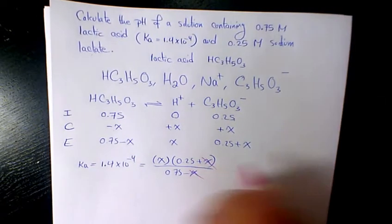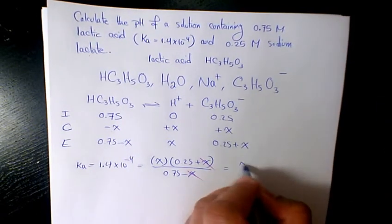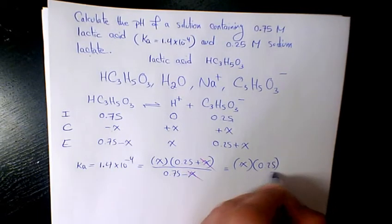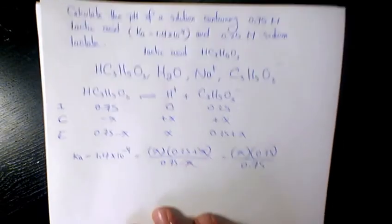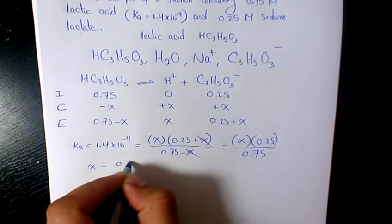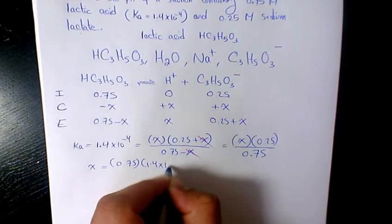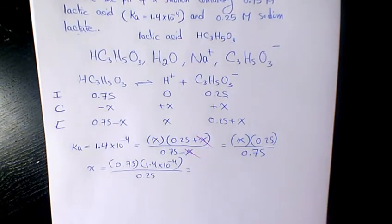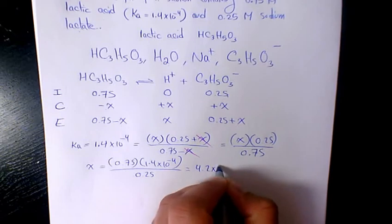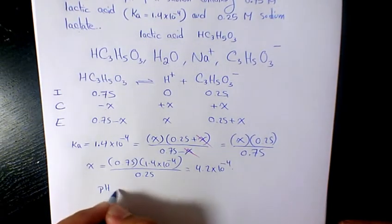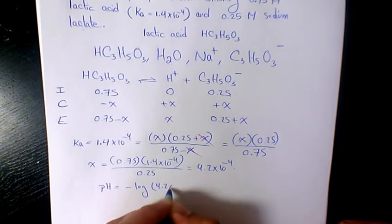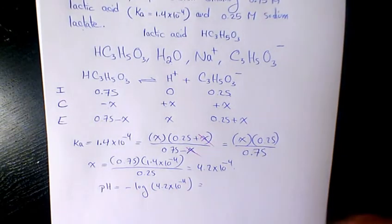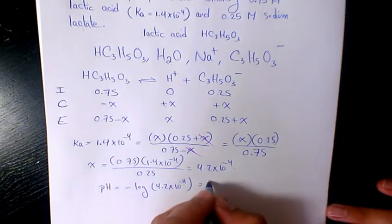Now these two x terms cancel out. It's going to be x times 0.25 divided by 0.75. So x will be 0.75 times 1.4 times 10 to the power of negative 4 divided by 0.25. It's going to be 4.2 times 10 to the power of negative 4. So pH will be negative log of 4.2 times 10 to the power of negative 4, which is going to be 3.7. That's going to be the pH of this buffered solution.